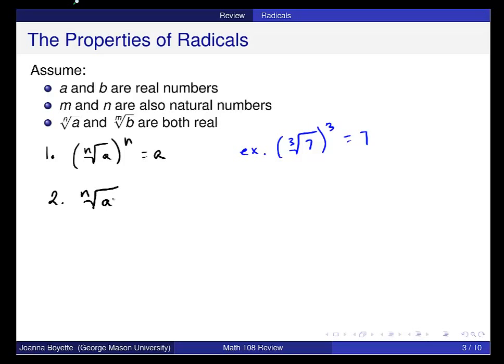The nth root of a to the nth power looks the same when n is odd. When n is even, this is the absolute value of a. So an example here, for example, the cubed root of negative 2 cubed, which is negative 8, is just negative 2.